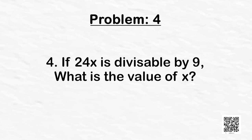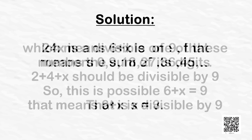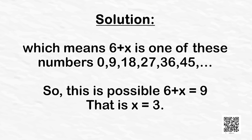Let's look at another problem: if the 3-digit number 24x is divisible by 9, what is the value of x? Since 24x is divisible by 9, the sum of its digits 2 + 4 + x = 6 + x should be divisible by 9. This is possible when 6 + x = 9 or 18. Since x is between 0 and 9, this is possible only when 6 + x = 9, that is x = 3.